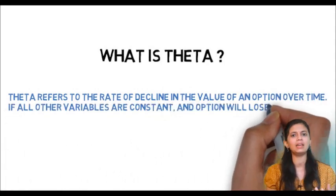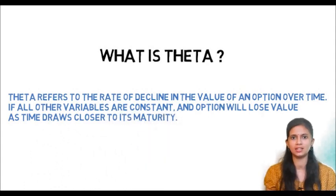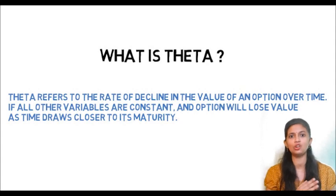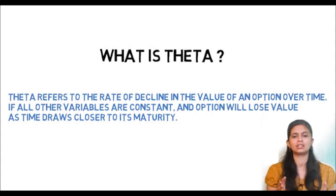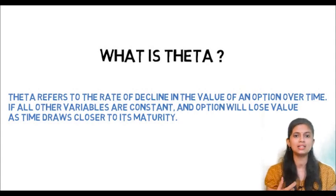If we buy some food item, an expiry date will be given on that item. As we go closer to the expiry date, the value of that product goes on diminishing, and on the expiry date the value of that product becomes zero. Similarly, options also will have an expiry date. So the time gap between the current date and the expiry date will have some value, and this value is called time value or theta.